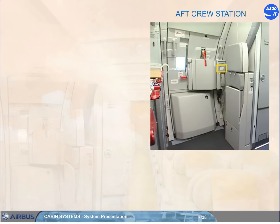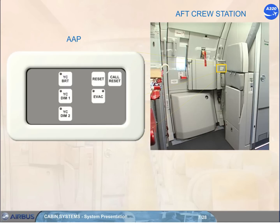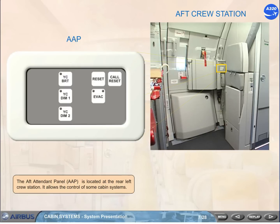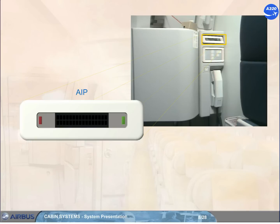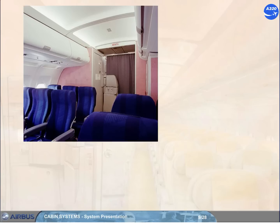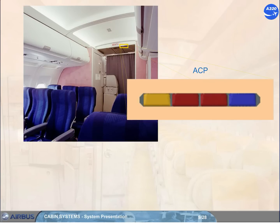The After Attendant Panel, AAP, is located at the rear left crew station and allows the control of some cabin systems. The Attendant Indication Panel, AIP, is part of the communication system and located near each main cabin crew station, where communication and system-related messages are displayed. The Area Call Panel, ACP, indicates: crew communication in pink steady or flashing; passenger call in blue steady; lavatory call in amber steady; and lavatory smoke detection in amber flashing.